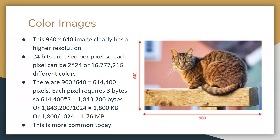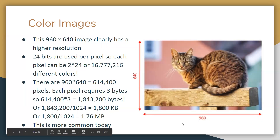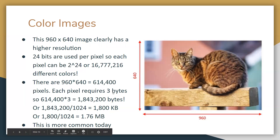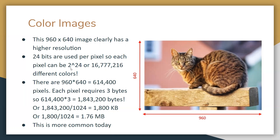This is a much nicer image. Here we have a 960 by 640 pixel image. It has a much higher resolution because we're also doing 24 bits per pixel. That means every single pixel can have over 16 million different colors.